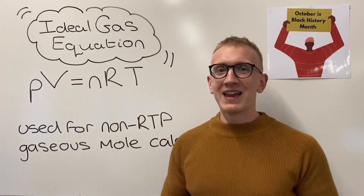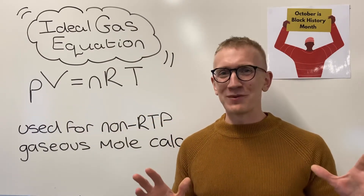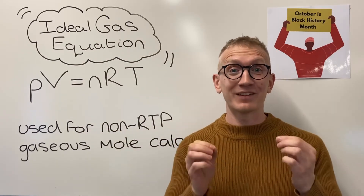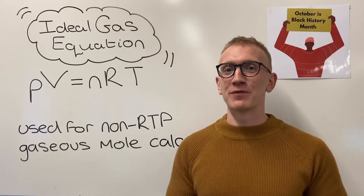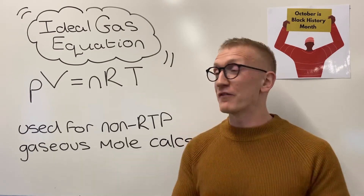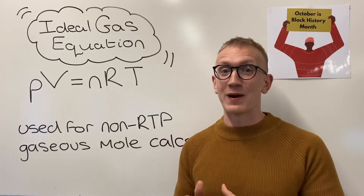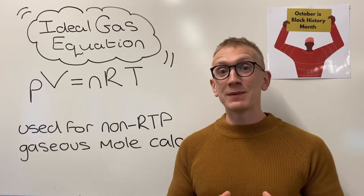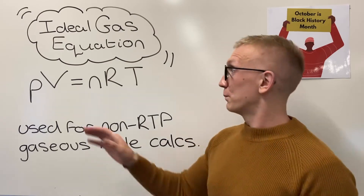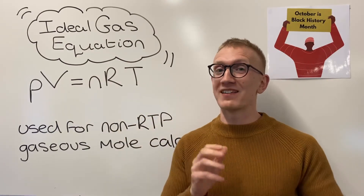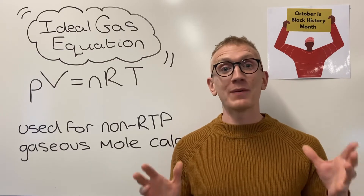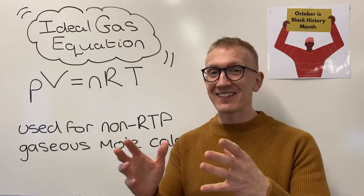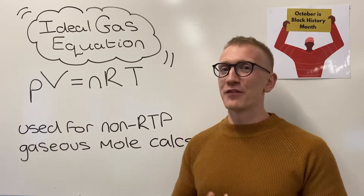Volume — different from all other calculations you do in chemistry — has got to be in metres cubed. So if they give you a centimetres cubed value in the exam, you've got to divide it by a million before it goes into the ideal gas equation, and decimetres cubed would need to be divided by a thousand. Please be very careful with volume as it's quite unique — there's nowhere else in the A-level where we use metres cubed for gases, so make sure it sticks out rather than hides.